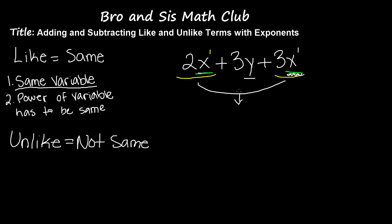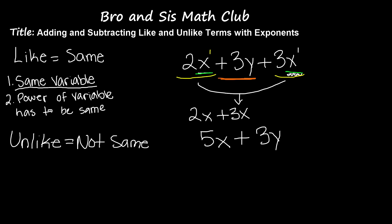When you add 2x plus 3x, you get 5x. Now remember, positive 3y is unlike from these two, so we cannot do anything with it — I'll just bring it down into my answer as plus 3y. So the answer to this expression is 5x plus 3y.